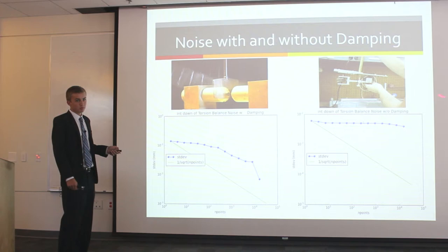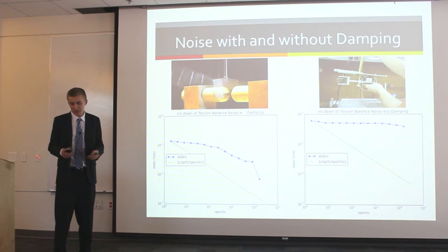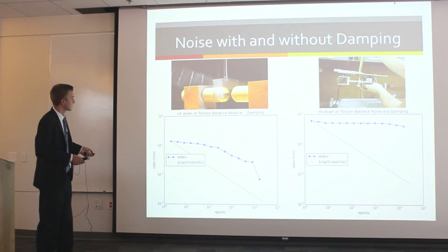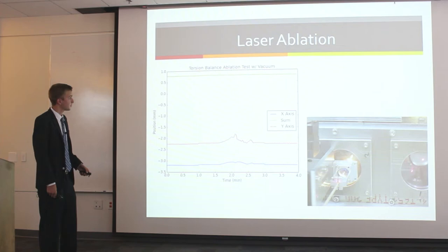First I want to show you what we use to dampen our system. As Jeffrey mentioned, there's lots of noise in the world around us, and we have vibrations as well. Our torsion fiber is very sensitive to all these vibrations, so we need to dampen them out. We found that using the dampener is much more helpful.